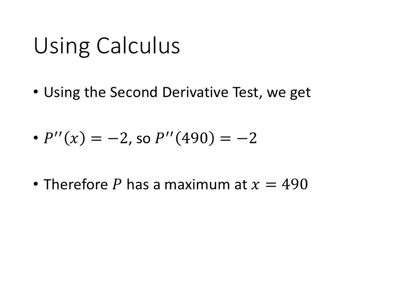We only found one critical value, so we're pretty sure that that's the one that we're looking for, but let's just make sure that it really is a maximum by using the second derivative test. We get that the second derivative is negative 2, and so that means that we do in fact have a maximum at x equals 490.